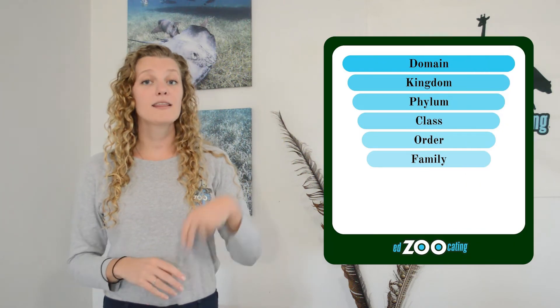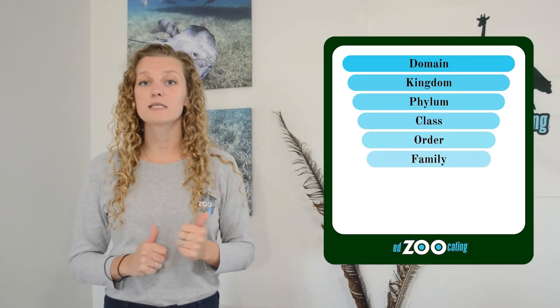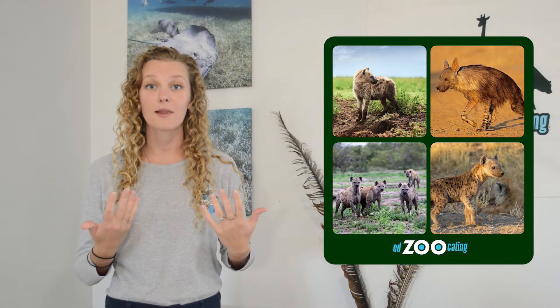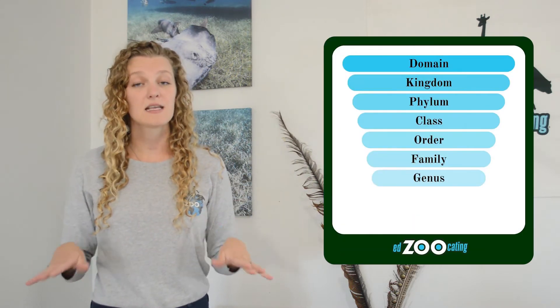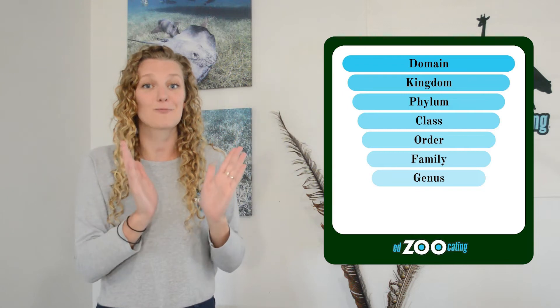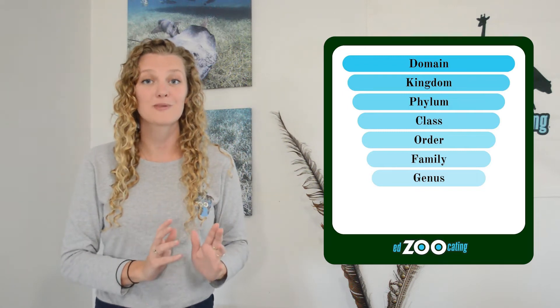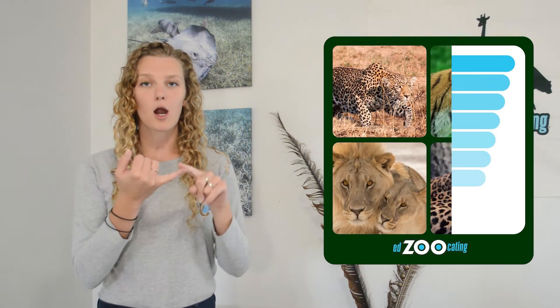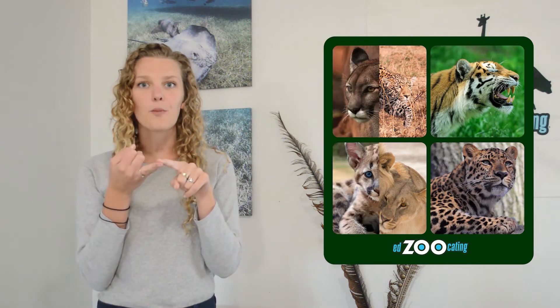One step below order, we have our families. Now in the Carnivora order, some examples of families might be the cat family, the dog family, the bear family, or the hyena family. One step beneath family is going to be our genus. Genus is actually the first word of the organism's scientific name, so now we're getting really narrow with our groups. Looking at the cat family, some of the genuses we might find are Panthera — our big cats — Puma, which is our mountain lion, or Lynx, which includes the lynx and the bobcat.